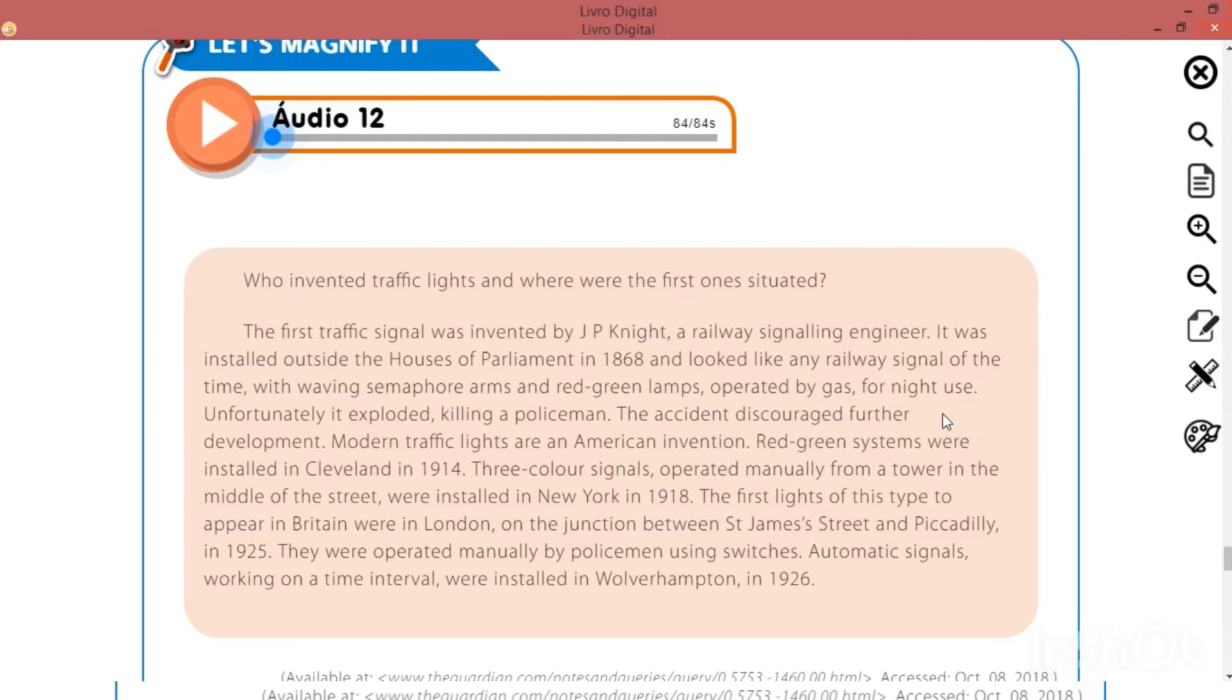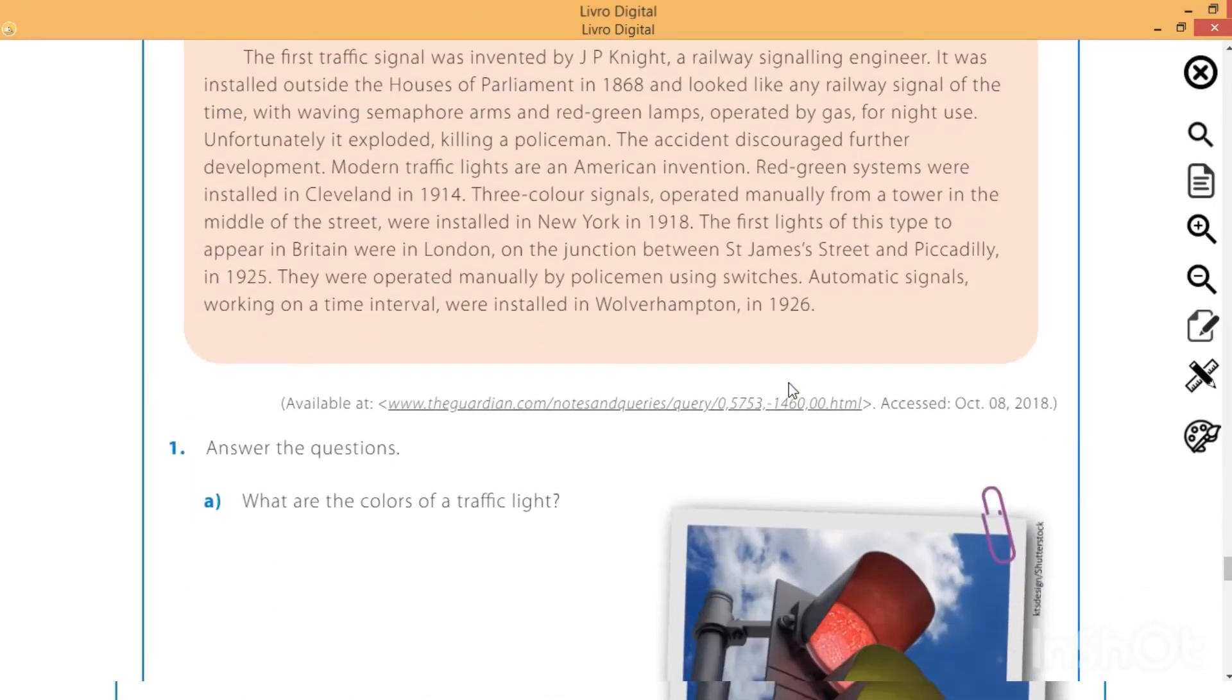Os semáforos modernos já são uma invenção americana. São sistemas vermelho-verdes que foram instalados em Cleveland em 1914. Sinais de três cores, operados manualmente a partir de uma torre no meio da rua. E eles foram instalados em Nova York em 1918. As primeiras luzes desse tipo a aparecer na Grã-Bretanha foram em Londres, na junção entre a rua Seat James e Piccadilly, em 1925. Eles eram operados manualmente por policiais usando interruptores. Sinais automáticos trabalhando em um intervalo de tempo foram instalados em Wolverhampton em 1926.